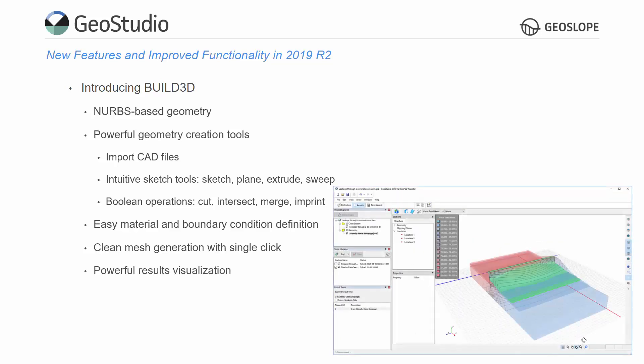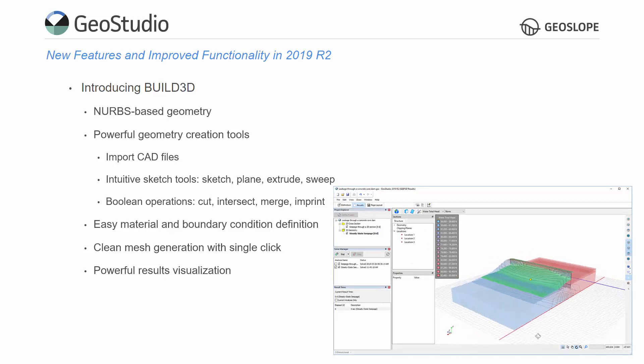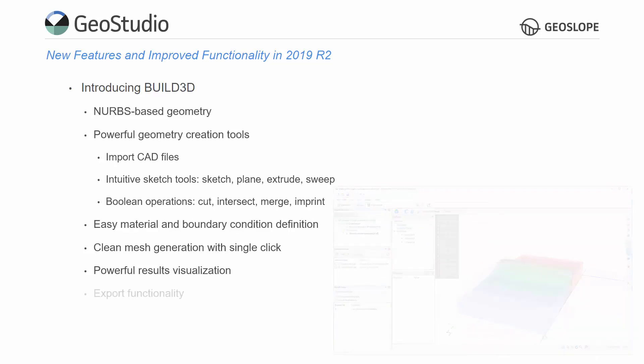Multiple options are available for viewing three-dimensional results. Finally, Build3D provides export functionality to CAD files. For more information on GeoStudio's newest products and features, please see the GeoSlope website.